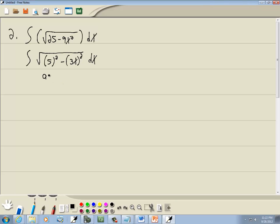Now the a would be 5 and the u would be 3x. If I had those and I did the du, we would have 3 dx. So I need a 3 inside, so I can put it there and offset it with the 1 third out in front.